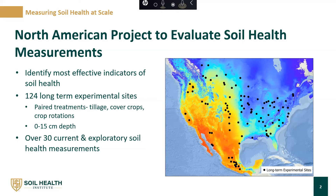At these sites we collected over 2,000 soil samples from different paired treatments. These included samples from differences in tillage, cover crops, and crop rotation. As most soil health measurements go, we collected soils from 0 to 15 centimeters and sent these soil samples to five different laboratories to have over 30 different current and exploratory soil health measurements conducted.